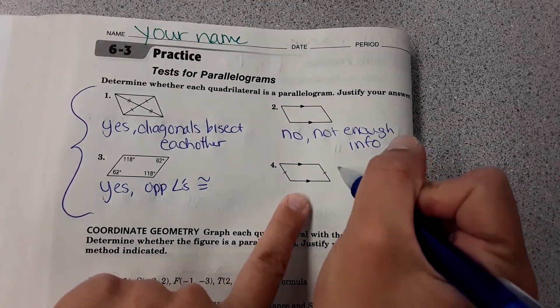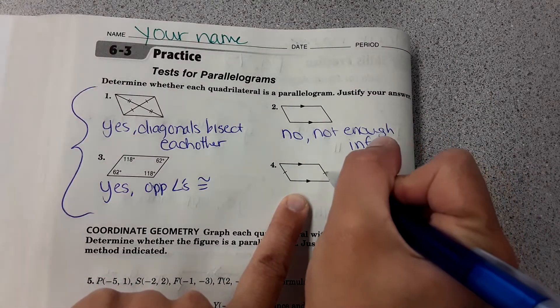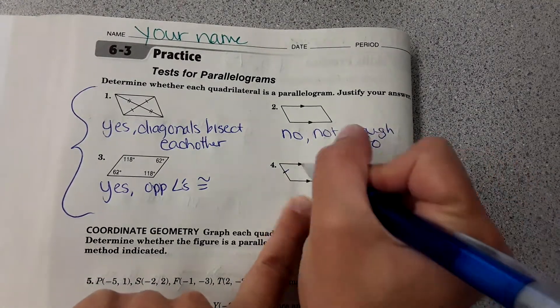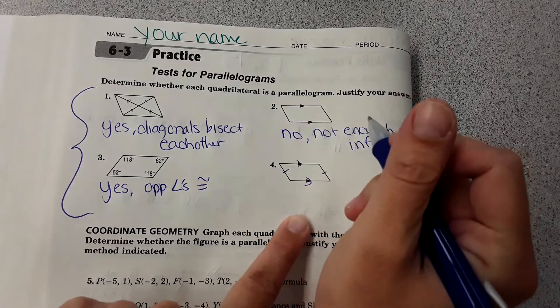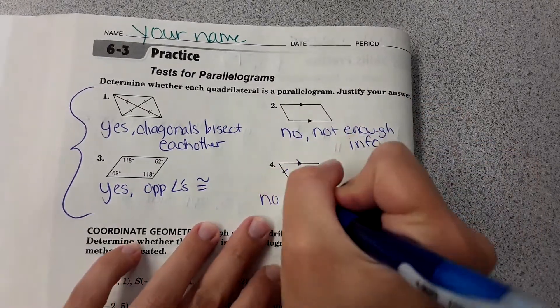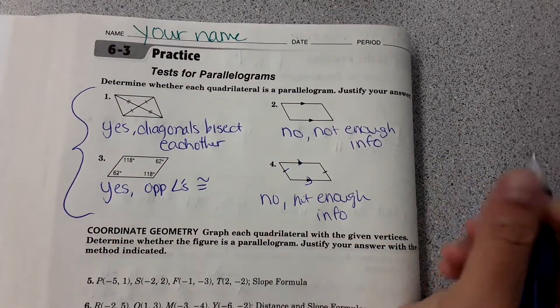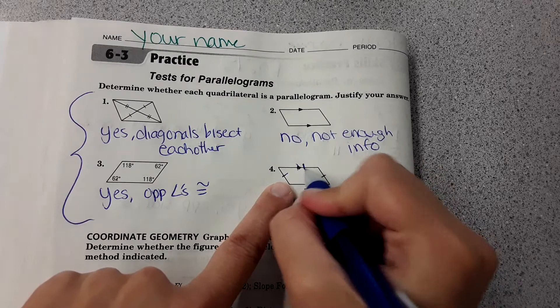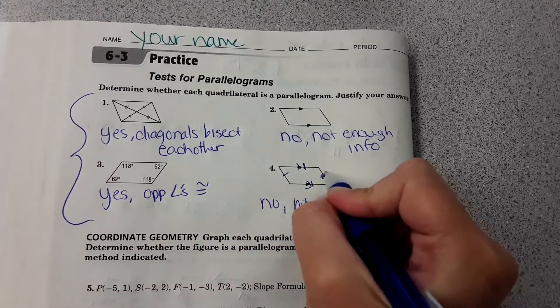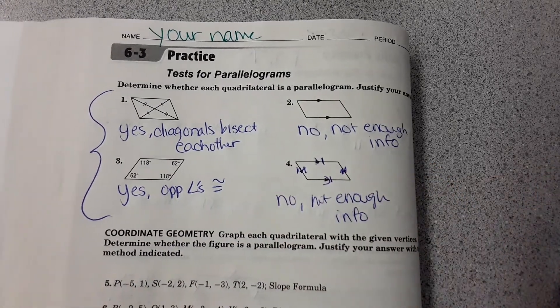And then four shows one side congruent and one side parallel. Not enough info. The same side would have to be congruent and parallel for it to be able to prove it's a parallelogram.